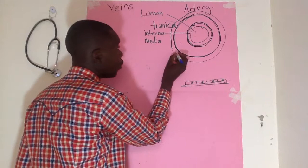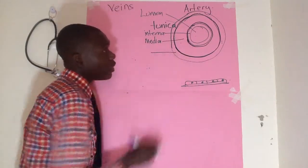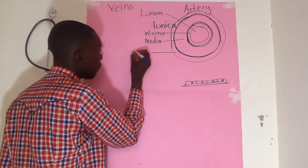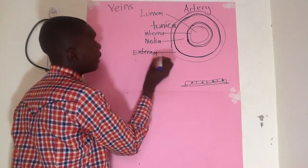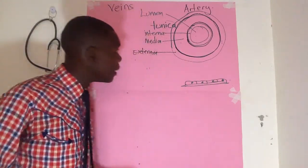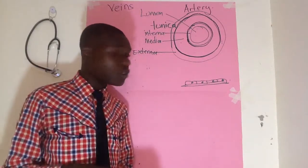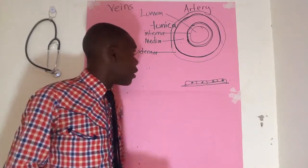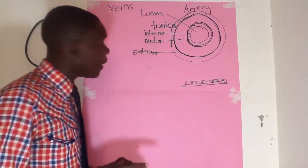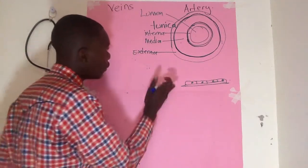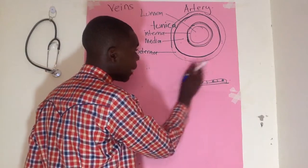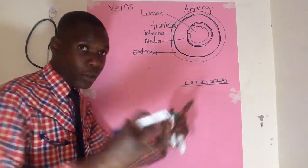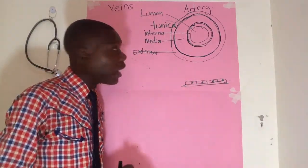The outermost layer of the artery is the tunica externa — external because it is outside. It is mainly made up of collagen, with a smaller portion of smooth muscle and also elastic fiber strands within. The collagen and elastic fibers allow free expansion of the artery as blood moves through it.